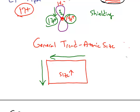If you go left to right, the effective nuclear charge increases, and that's why atoms on the right side in a column are smaller than the atoms on the left side.